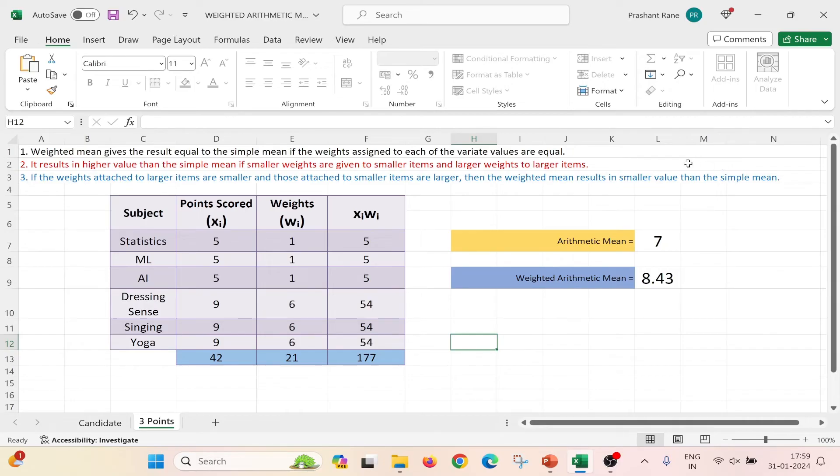Now let us see the third aspect. The third aspect states that if the weights attached to the larger items are smaller and those attached to the smaller items are larger, then the weighted mean results in smaller value than the Simple Mean. That means if larger items are given smaller weights and smaller items are given larger weights, then the Weighted Arithmetic Mean will be smaller than the Simple Mean. So let us do the same. To the smaller values we will assign higher weights and to the larger items we will assign smaller weights. And we can see that as shown in the aspect, the Weighted Arithmetic Mean is smaller than the Arithmetic Mean. Thus we have proved all the three concepts using the Excel sheet.